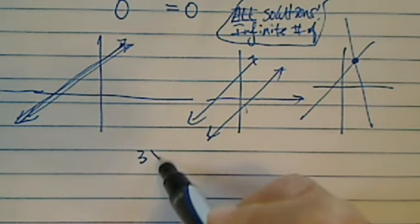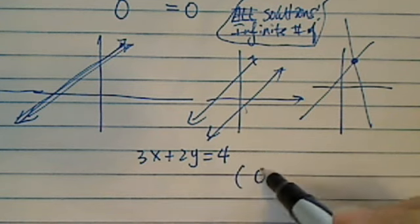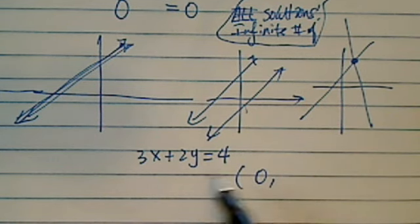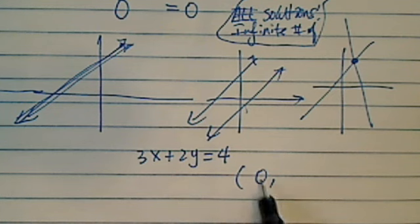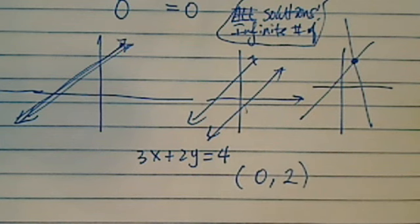If you have 3x + 2y = 4, and I tell you I want x = 0, then you can solve for y. So 3 times 0 is 0, so 2y = 4, then y is going to be 2. That's a solution: (0, 2).